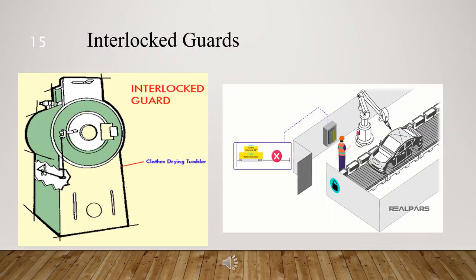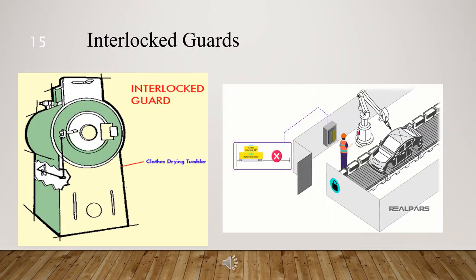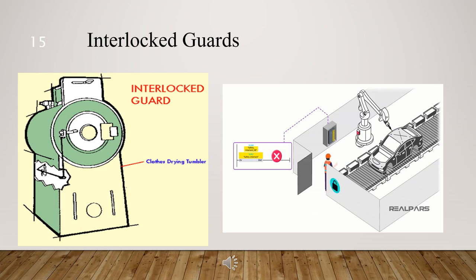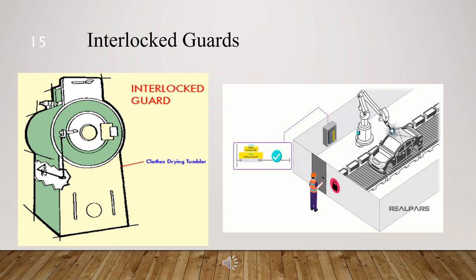In this part, we will learn about interlocking safety guards. Interlocking guards, also known as barrier guards, automatically shut off or disengage the power source when the guard is open or removed. These are particularly useful in situations where operators need to access the guarded parts of the machine, such as when clearing jams.